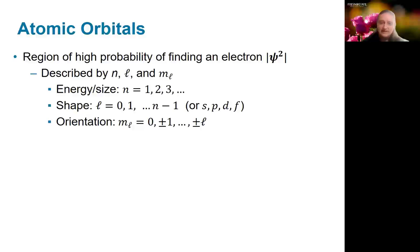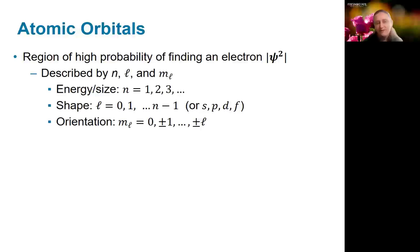To summarize: atomic orbitals are regions of high probability of finding an electron — they tell us about the shape and location of electrons around a nucleus. Orbitals are described by three quantum numbers: n, l, and m_l. The principal quantum number n describes the energy and size of the orbital, starting at 1 and counting up. The shape is described by l, which starts at 0 and goes up to n minus 1, and gets alternate letter designations of s, p, d, or f.